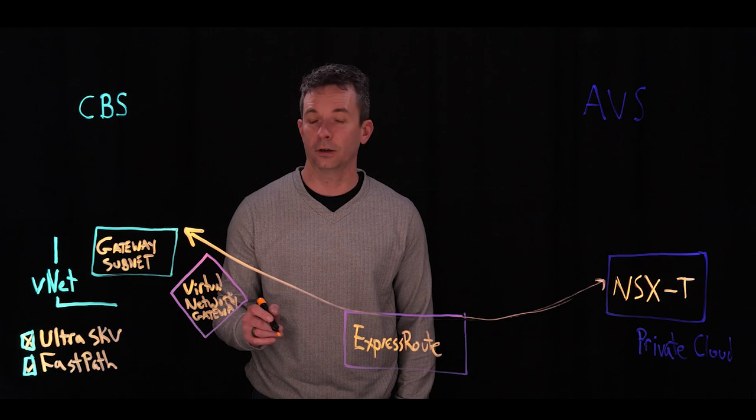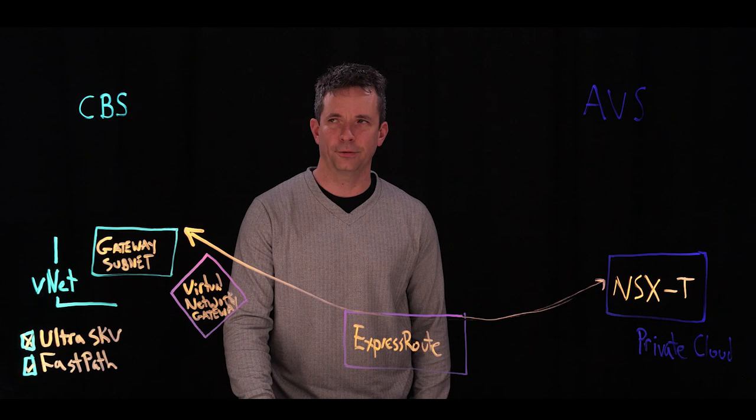within that virtual network gateway when you establish the CBS and NSX-T connectivity. And again, that's what enables virtual machines in AVS to more or less directly connect out to Cloud Block Store, an underlying storage device.